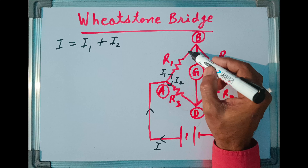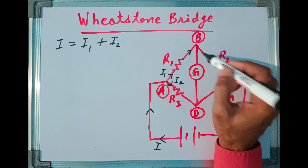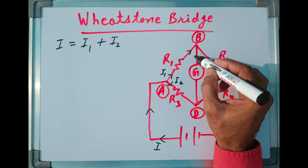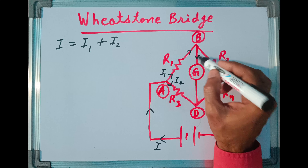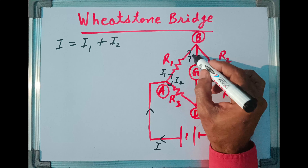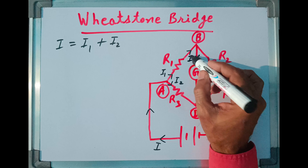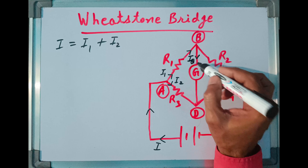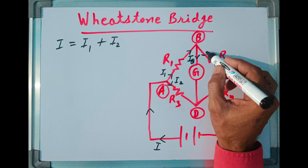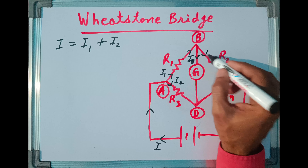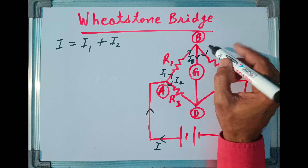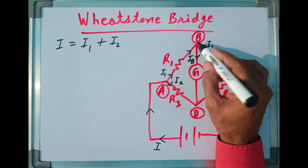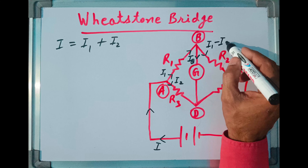When I1 reaches junction B, it further splits into two parts. Suppose a part of it goes towards the galvanometer. Let us call this current Ig. The rest of the current will flow to resistance R2, and it will be I1 minus Ig.